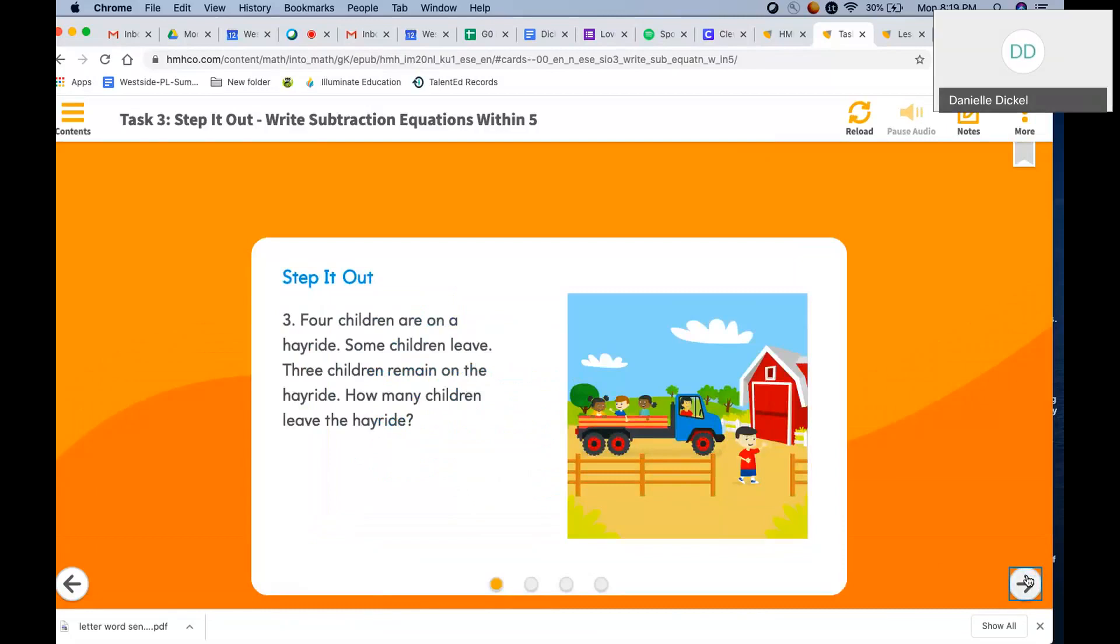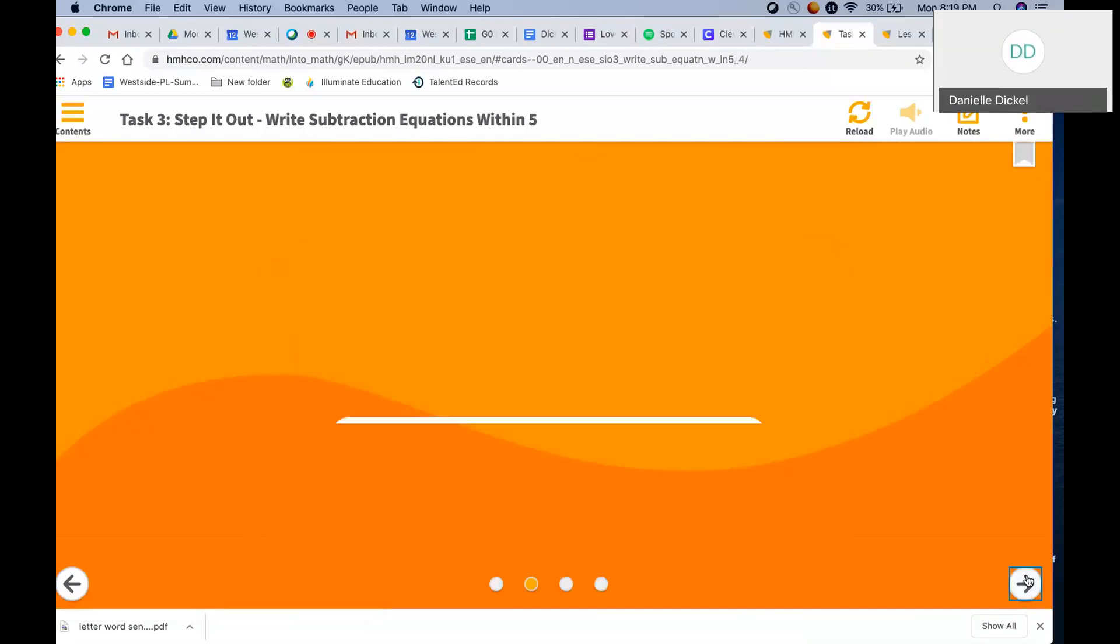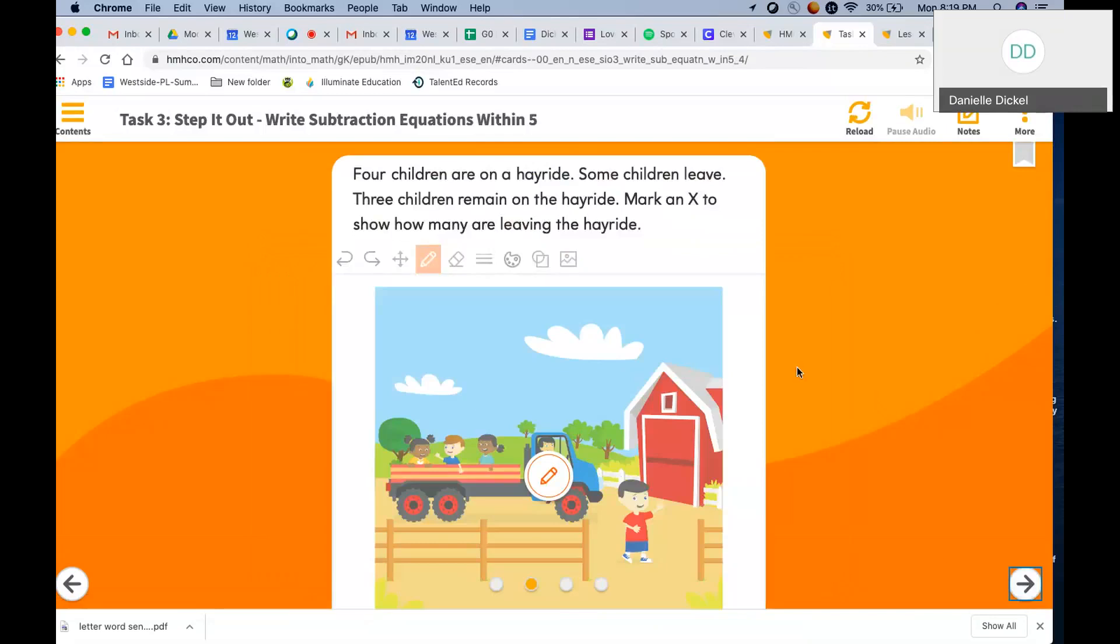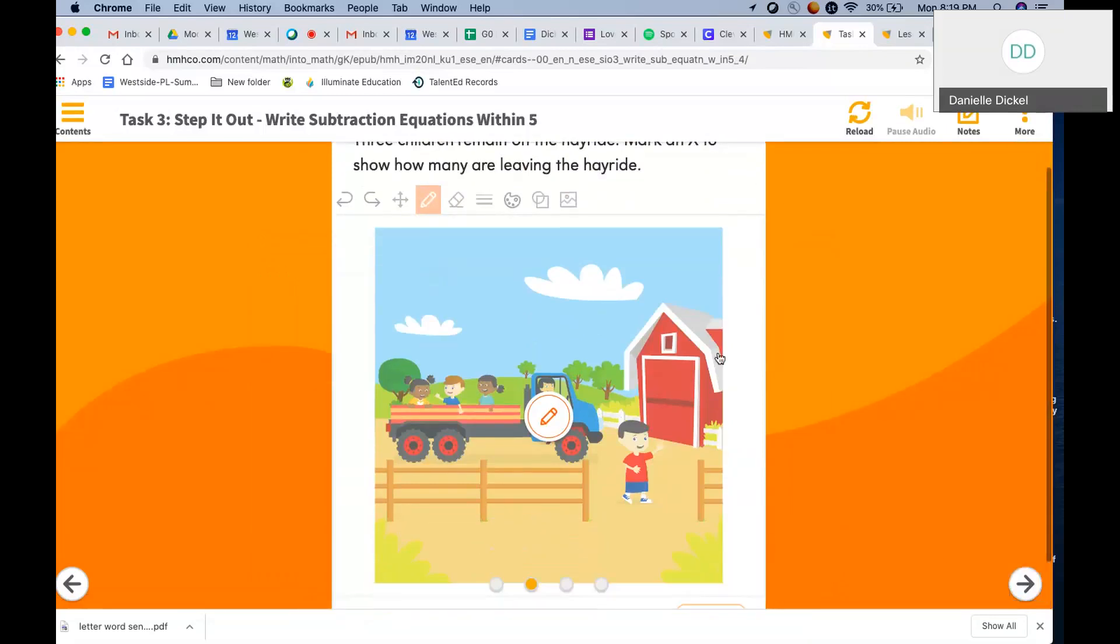Next, four children are on a hayride. Some children leave. Three children remain on the hayride. How many children leave the hayride? So we're going to mark an X to show how many children are leaving the hayride.